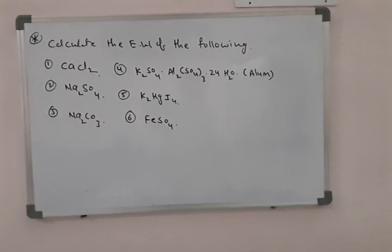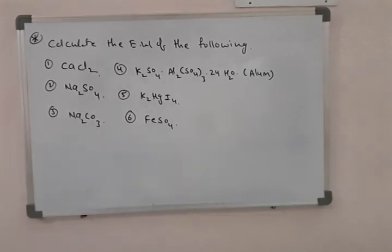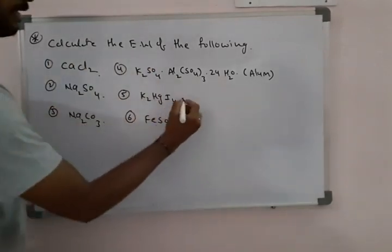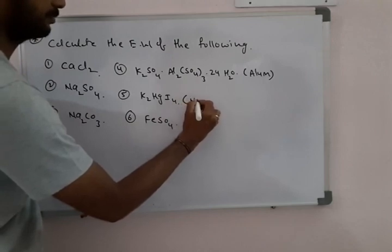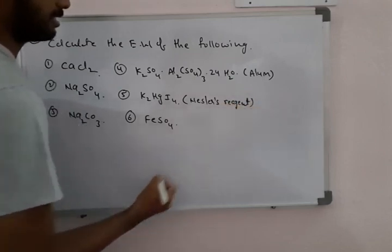Here 6 examples are given. We have to calculate the equivalent weight of the given compounds: one is calcium chloride, second is sodium sulphate, third is sodium carbonate, next is a sodium basic compound, then potassium dichromate, and finally K₂HgI₄ which is Nessler's reagent. You need to calculate the equivalent weights of all these compounds.